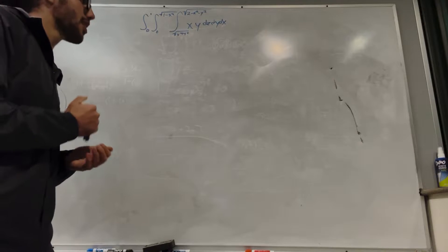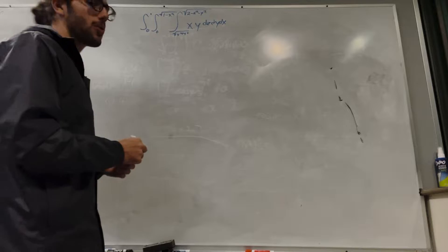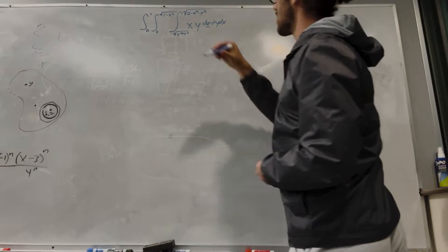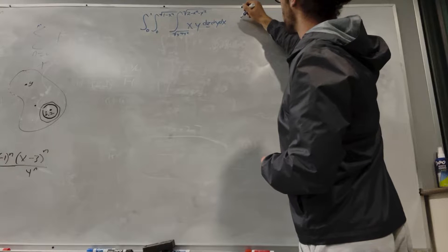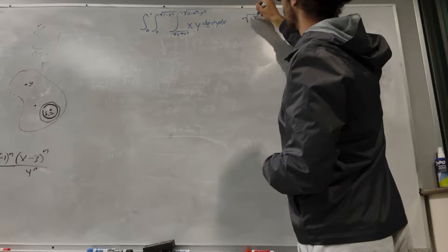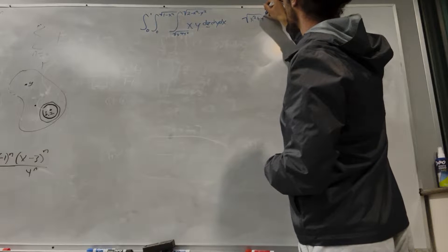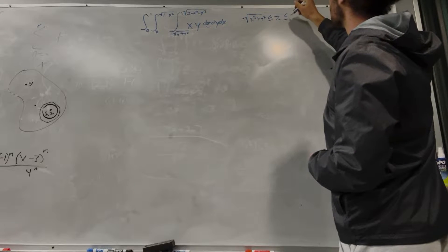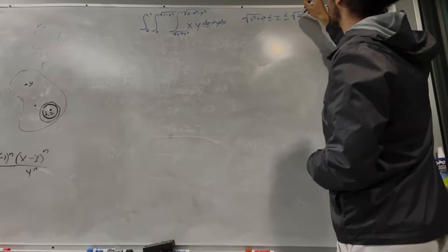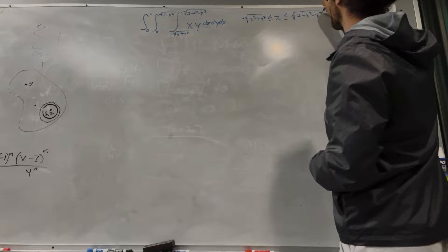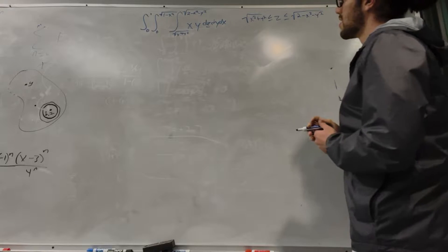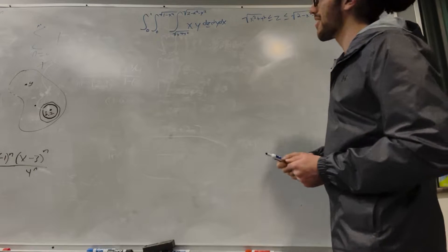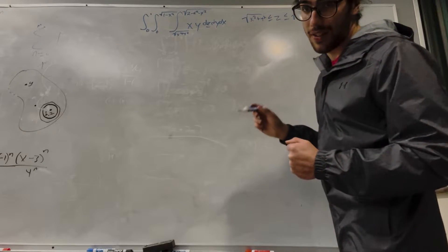So what we need to do is find our bounds. Let's write out what we know. We see dz is first and it correlates to these two bounds. So we have x squared plus y squared is less than z, but z is less than the square root of 2 minus x squared minus y squared. We still look at this and think, well, we know that already. So how do we convert this to spherical?